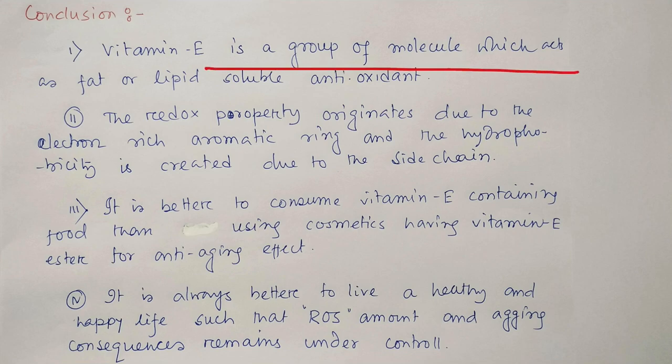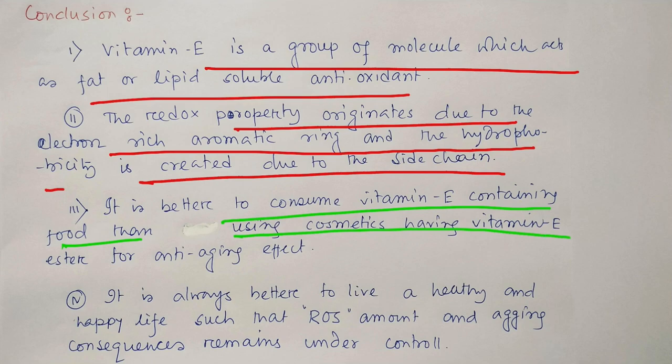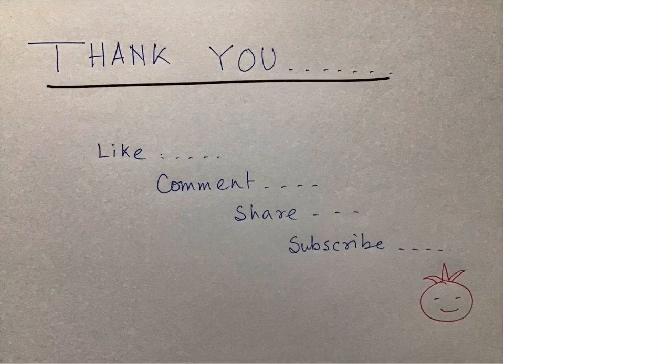What you have learned today: Vitamin E is a group of molecules which can act as a fat or lipid-soluble antioxidant. The redox property originates due to the electron-rich aromatic ring and hydrophobicity which is created due to the side chains. It is better to consume Vitamin E-containing food rather than using cosmetics having Vitamin E ester for anti-aging effects. It is always better to live a healthy and happy life such that the ROS or reactive oxygen species amount becomes less and aging also becomes less. Everything remains in our control and we are happy. This is the end of the discussion. I thank you all for watching this video. If you enjoyed, please like, comment, share, and subscribe to my channel, Chemistry: The Mystery of Molecules. Bye bye, see you in my next video.